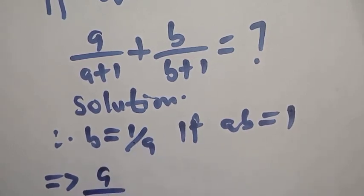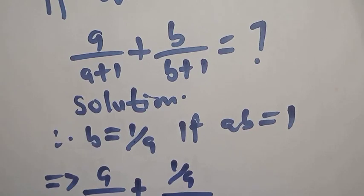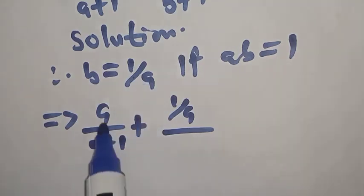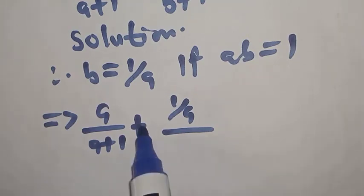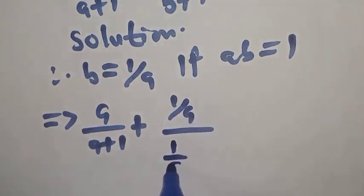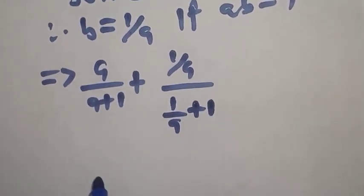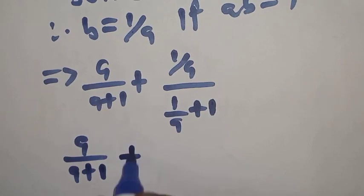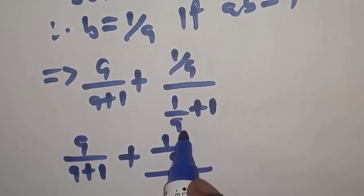We have A over A plus 1 plus B is 1 over A over. Anywhere you see B, you substitute 1 over A. So we have A over A plus 1 plus 1 over A over 1 over A plus 1. Let's find the LCM of this. The LCM is A.